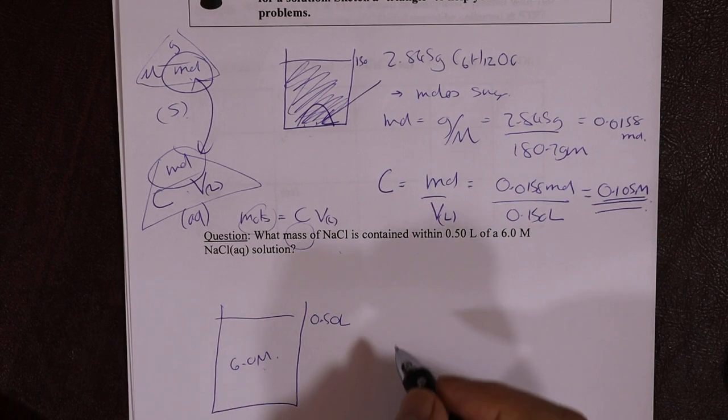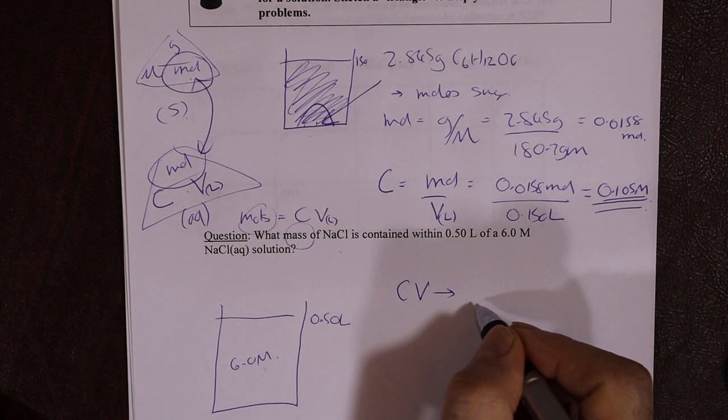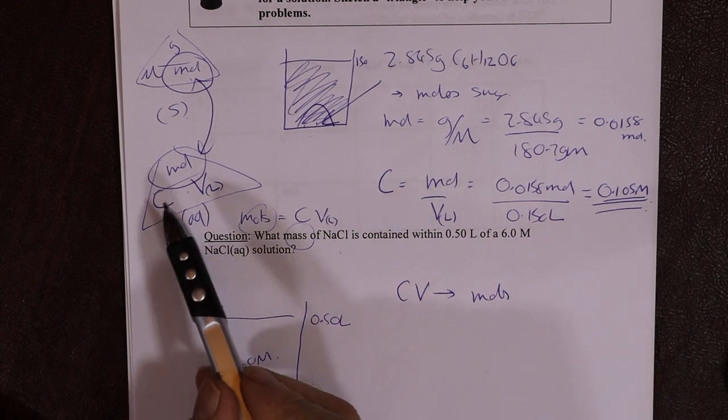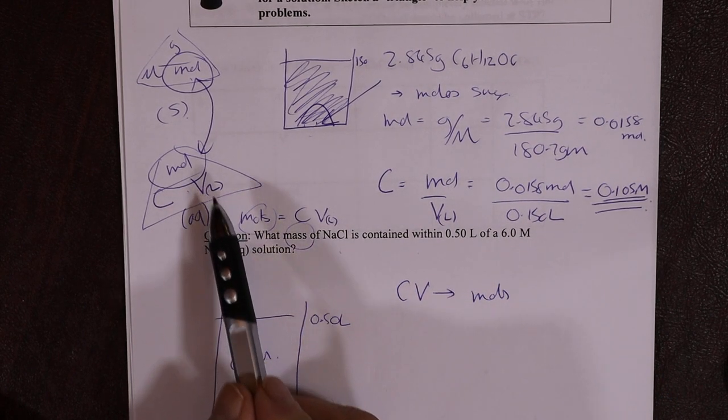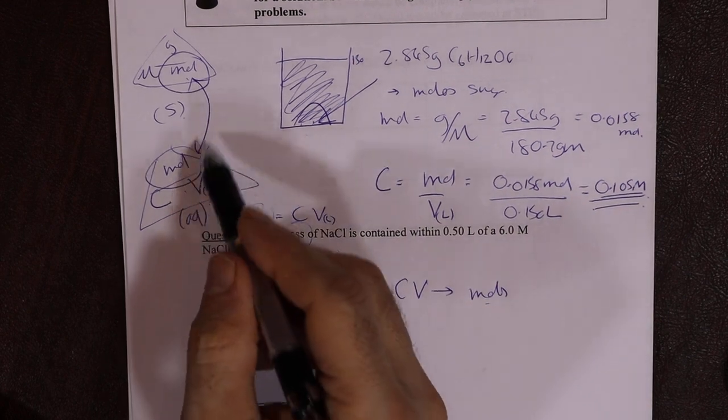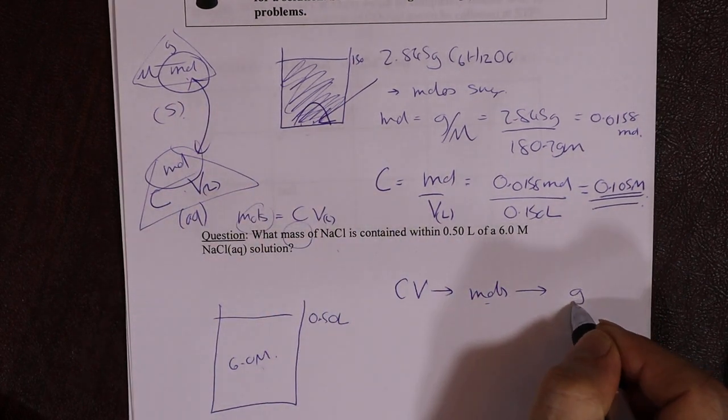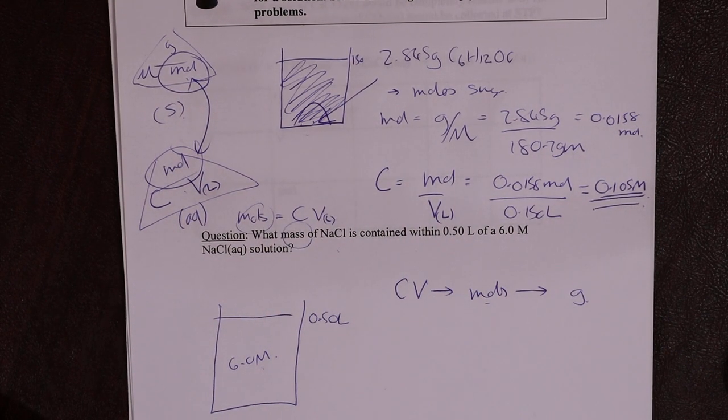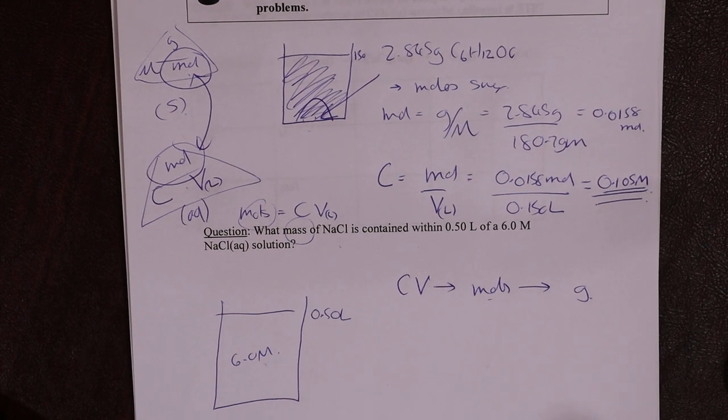Now, if you think about it, we can go from concentration volume to moles. So we use that first kind of solution triangle there. Now, once we've got moles, we can figure out how many grams of salt are in there, right? So pause there, try it, and then come back, and we'll look at how to do it.